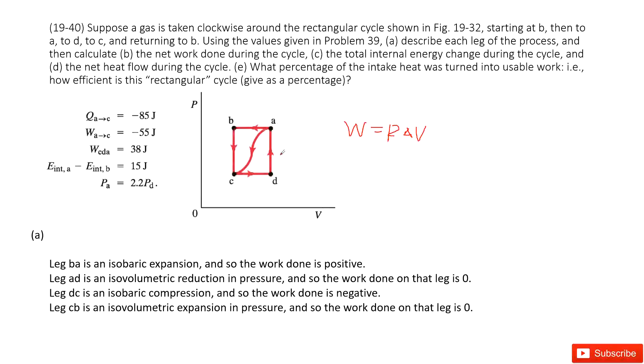Now we look at A to D. In this case, V is constant, delta V is zero. So the work done is zero. And in this case, we can see the volume is constant and pressure decreases. So this is isovolumetric reduction in pressure.